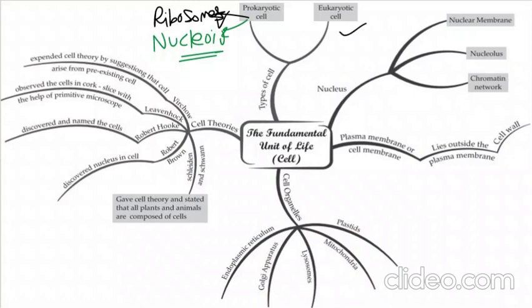Eukaryotes are all advanced cells — human cells, plant cells — where all organelles are properly present including a proper nucleus. The nucleus is the brain of the cell because it controls everything. It has a nuclear membrane for protection, a mini-nucleus called the nucleolus which produces genetic materials and ribosomes, and a chromatin network for DNA and RNA.